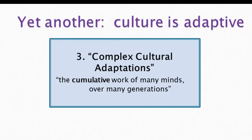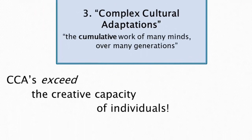Cumulative cultural evolution is evident in changes in computers, cell phones, software, and many other areas of human endeavor. A third argument differentiating dual inheritance theory from social science approaches is that culture is adaptive. Dual inheritance theorists have defined a concept called complex cultural adaptations — the cumulative work of many minds over many generations. This might be something like a bow and arrow, a method for building a kayak, a musical tradition, or a language. These adaptations exceed the creative capacity of single individuals.